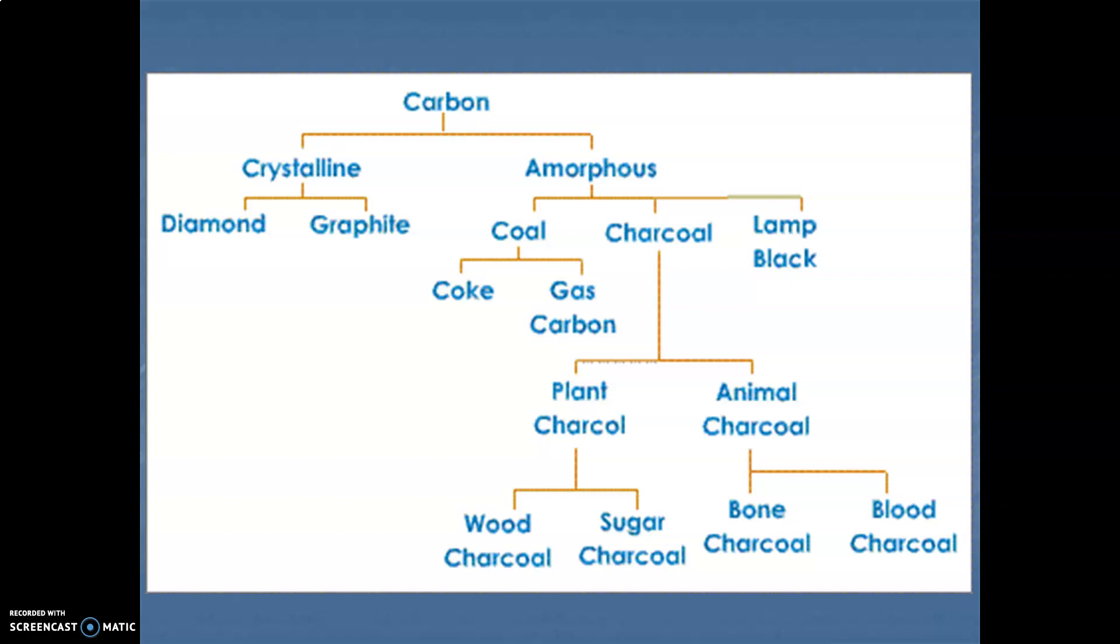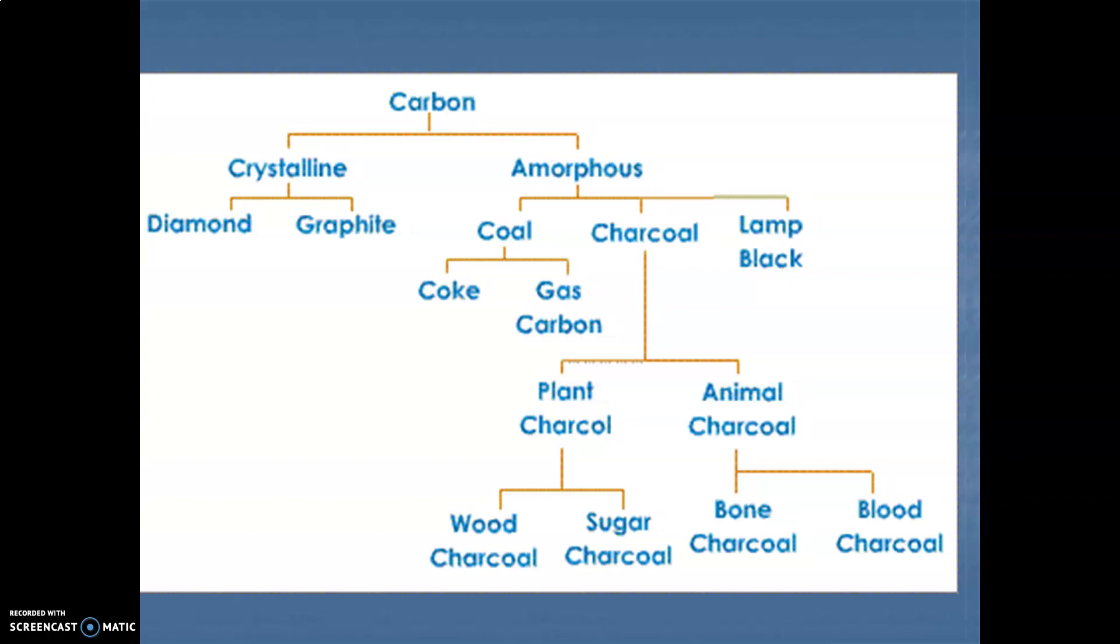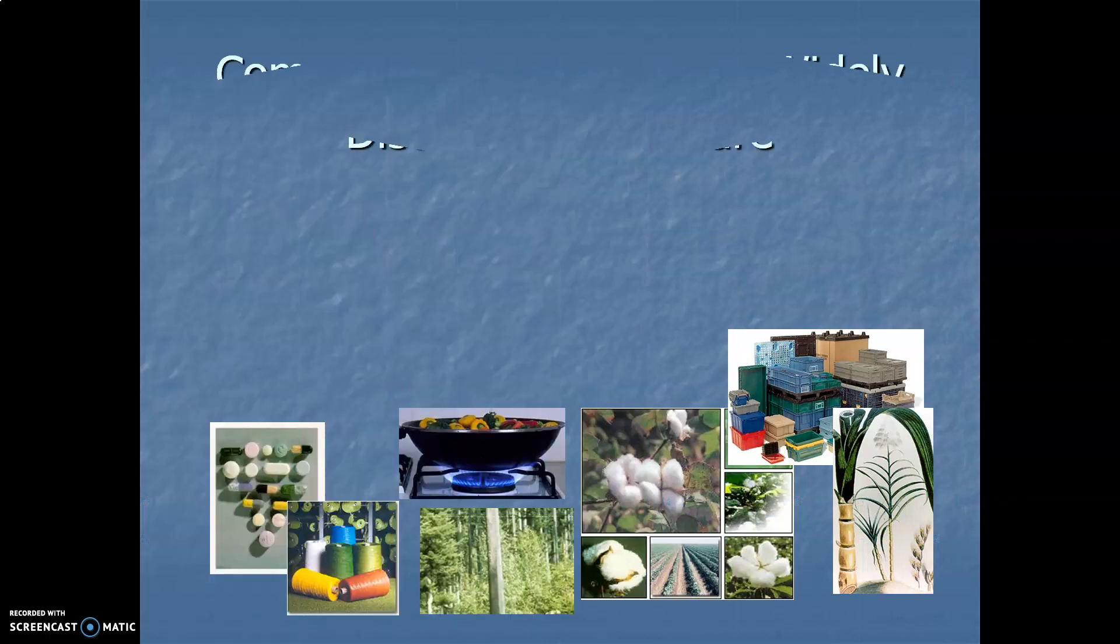The crystalline carbon form can be categorized in diamond, graphite and fullerene. When we talk about amorphous form, it is coal, charcoal and lamp black. Coal is divided into coal, coke and gas carbon. Charcoal can be of two types - plant charcoal which includes wood charcoal and sugar charcoal, and animal charcoal which includes bone charcoal and blood charcoal.